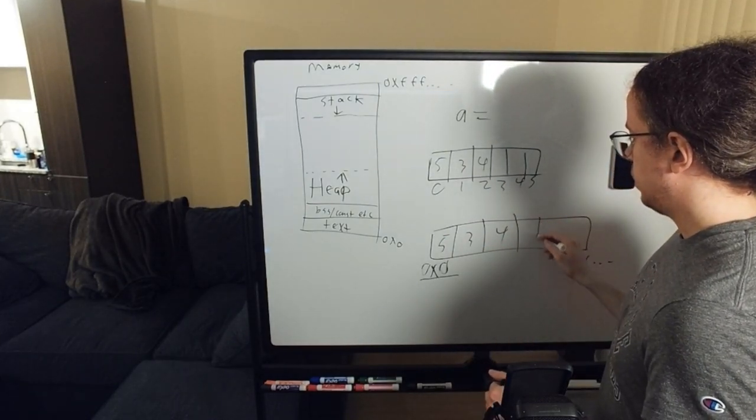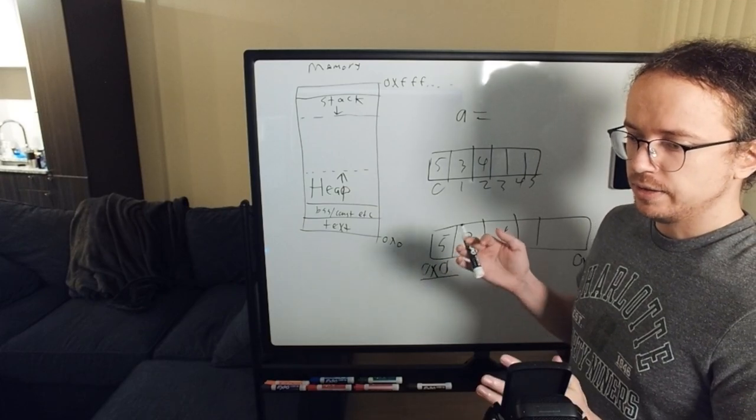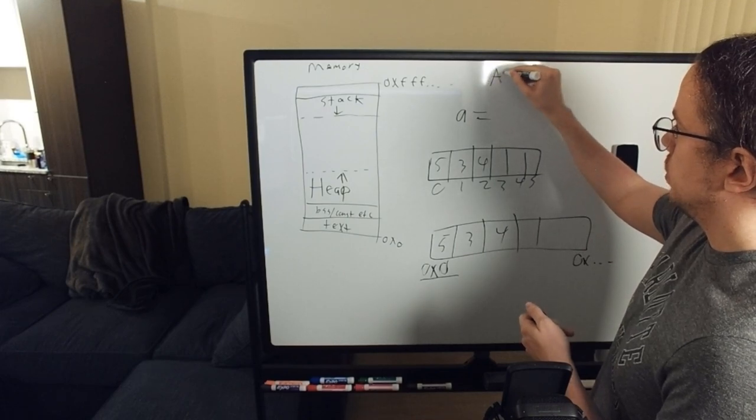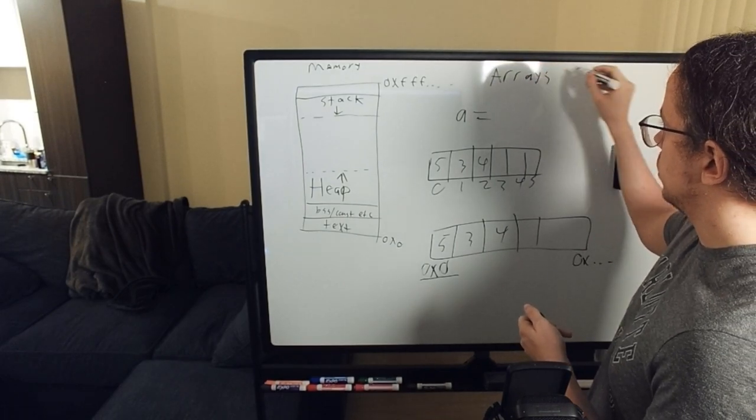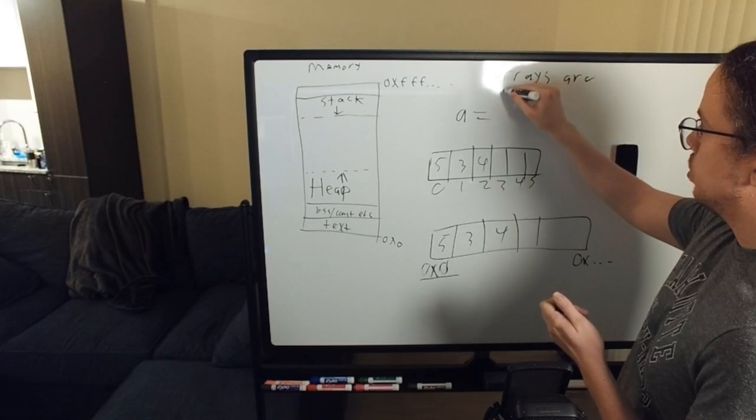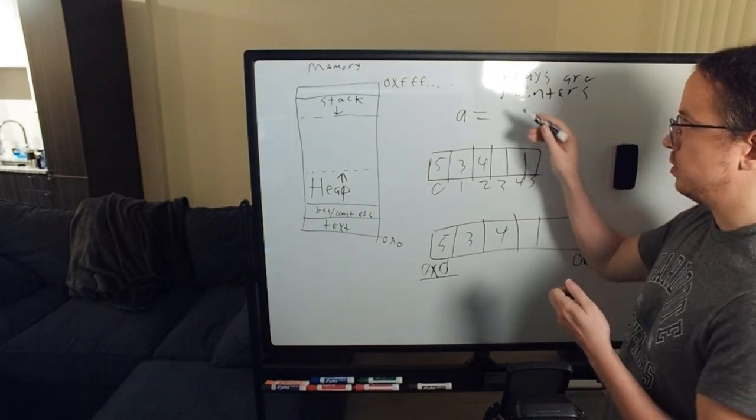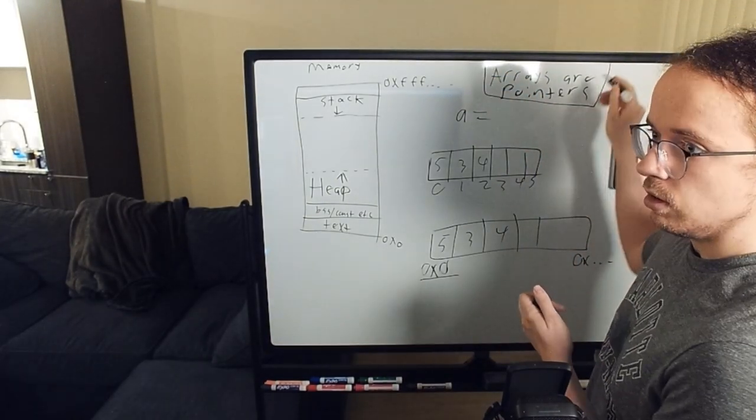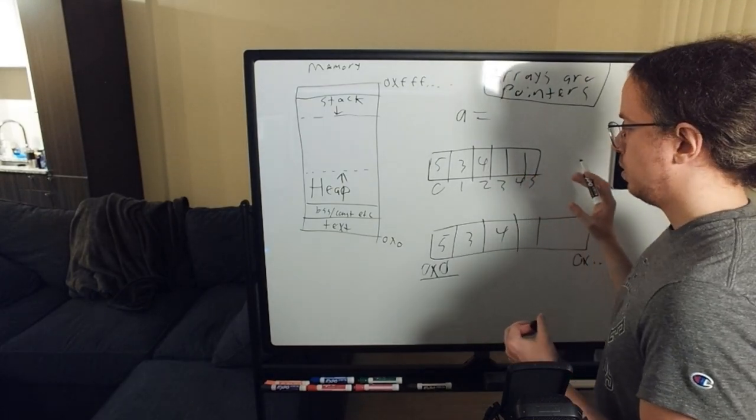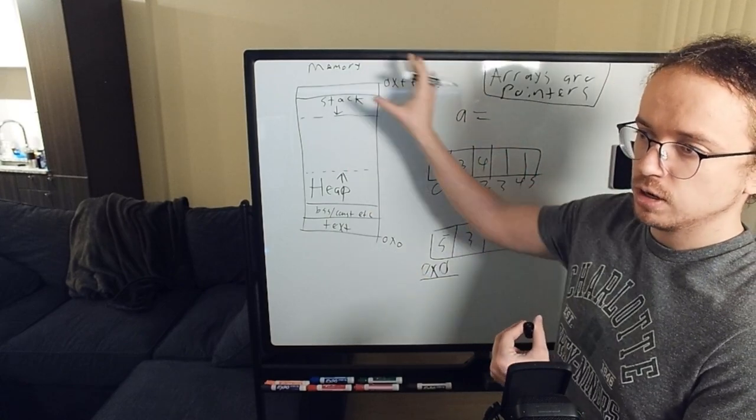So we're going to talk about pointers and how they're used in C and how we can use them in C. The most common takeaway in C is that arrays are pointers. This is how we use them. And I'm going to come back to this. But we want to know arrays are pointers. So for now, let's talk about how memory is structured more broadly.